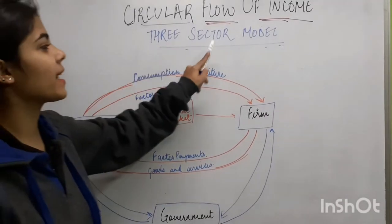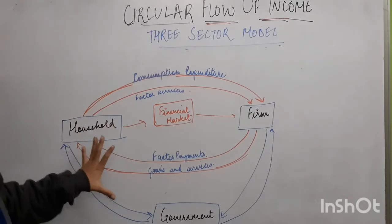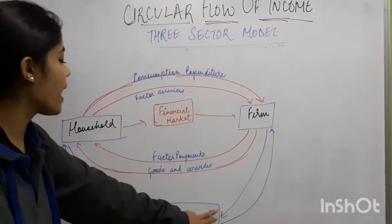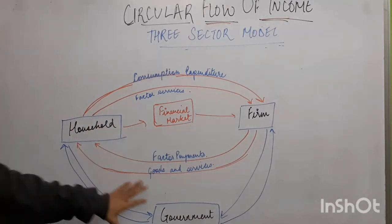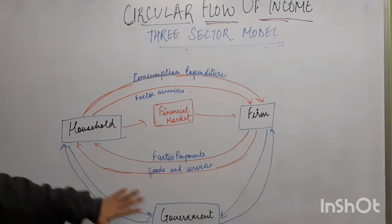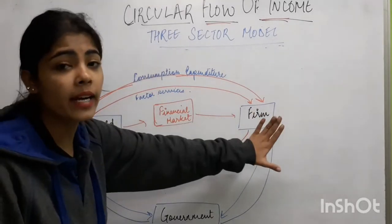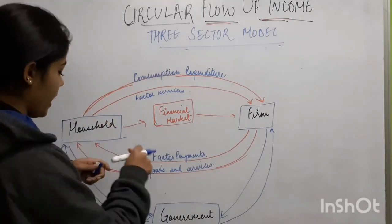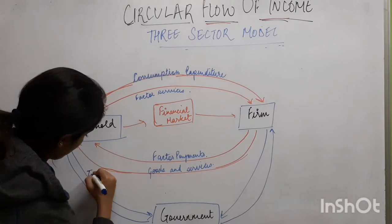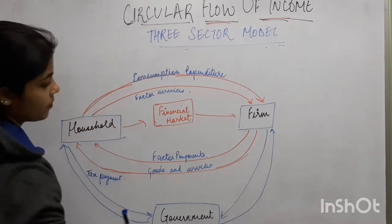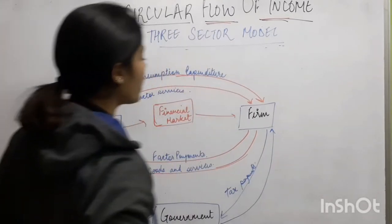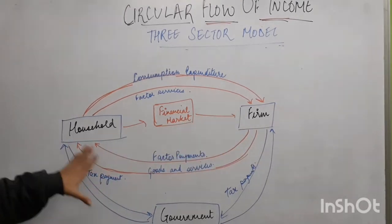Now we will study the three-sector model. The two-sector model with capital market remains the same, but an additional party joins — the government. Both households and firms pay taxes to the government.